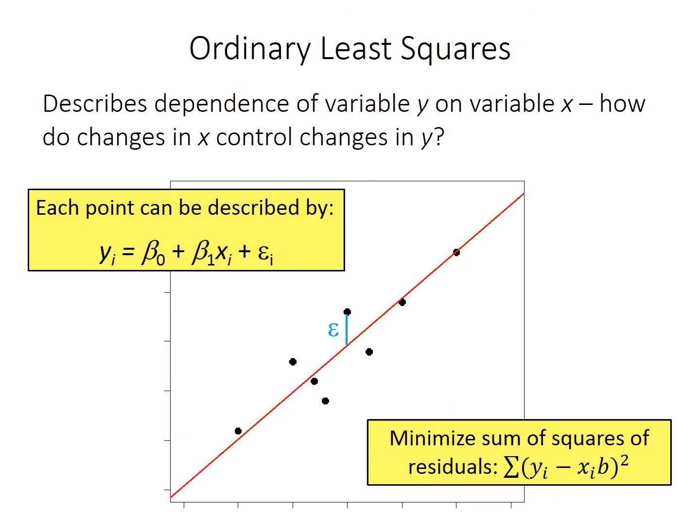To recap linear regression and ordinary least squares in particular: it describes the dependence of one variable, traditionally on the y-axis, on another variable, traditionally on the x-axis. Ordinary least squares, or OLS regression, fits a line by minimizing the squared distance between our best fit line and all points. That distance between the expected line and the observed point is called the residual, typically given the Greek letter epsilon.